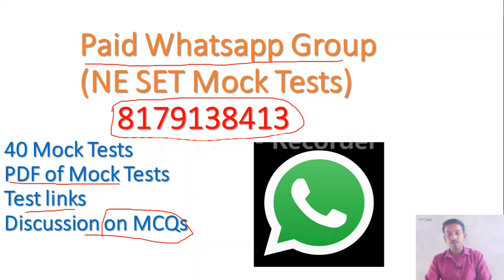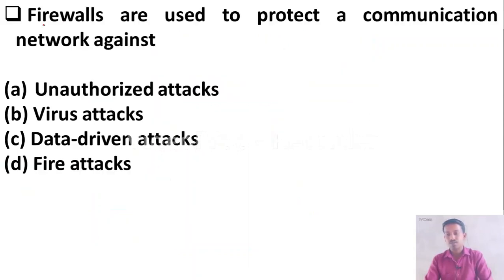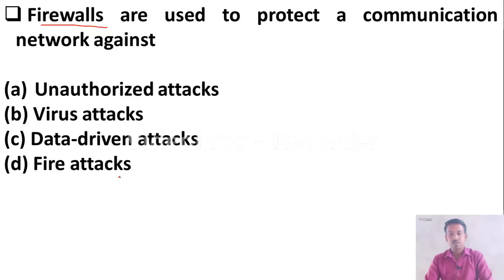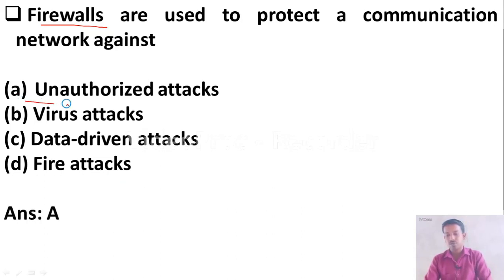Let us move to today's questions. The first question is: firewalls are used to protect a communication network against — Option A: unauthorized attacks, Option B: virus attacks, Option C: data-driven attacks, Option D: fire attacks. Firewalls are used to protect a communication network from unauthorized attacks, so Option A is the right answer.